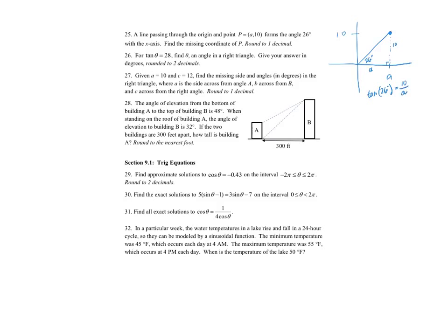If I multiply both sides by A, I get A tangent of 26 degrees equals 10. Then I can divide that over: A is equal to 10 over tangent of 26 degrees. If I plug that into my calculator, making sure I'm in degree mode, I get 20.05.